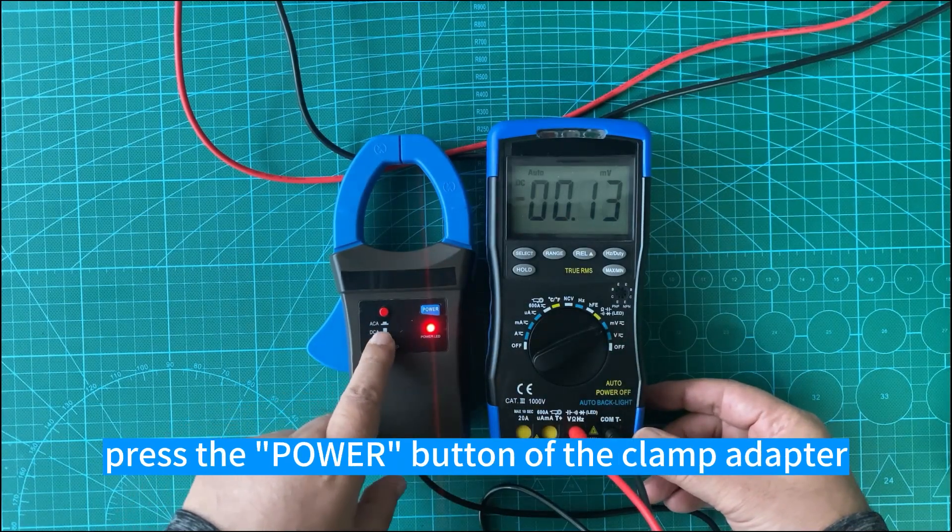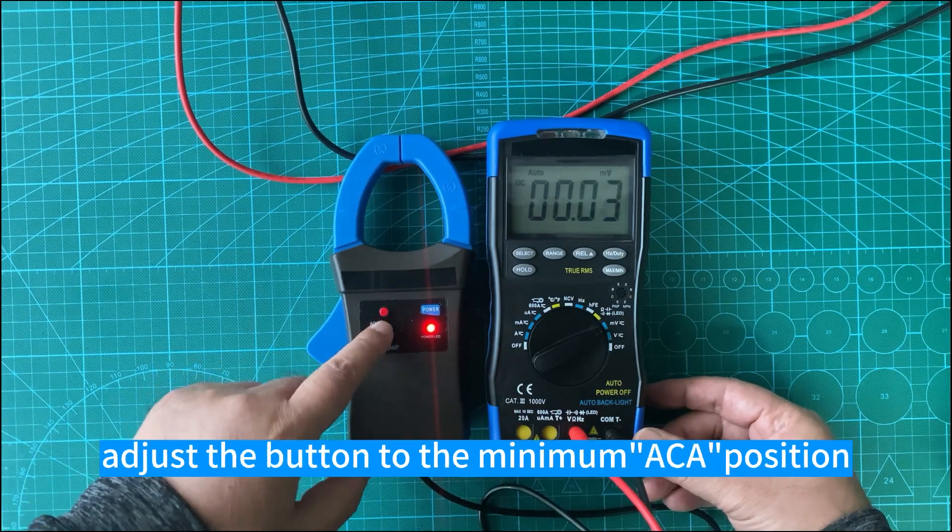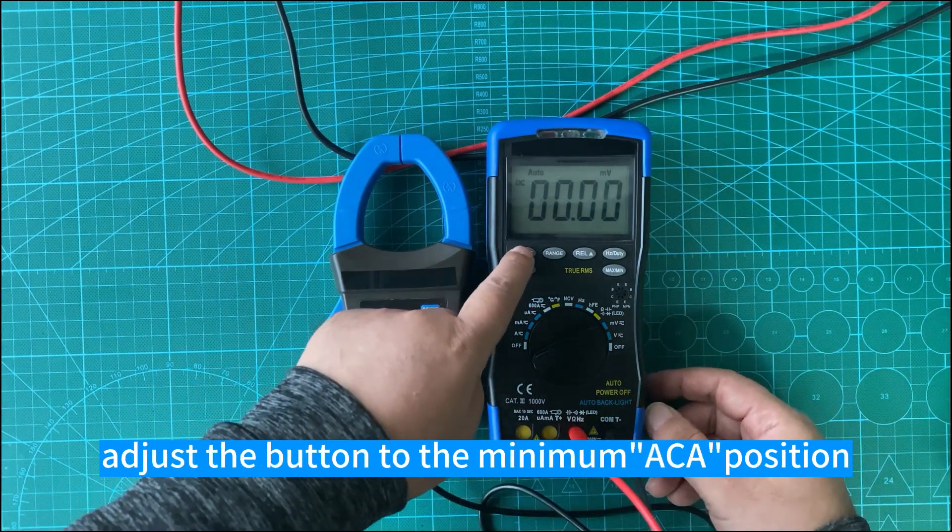Rotate the gear of the multimeter to the millivolt position. Press the power button of the clamp adapter, and press the red button of the clamp adapter. Adjust the button to the minimum ACA position.